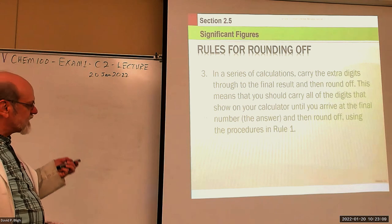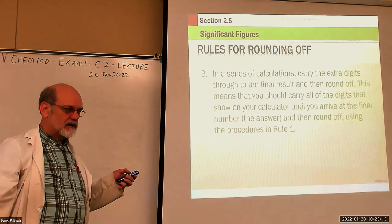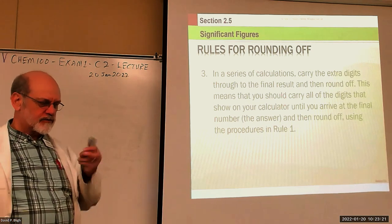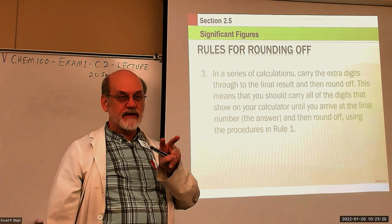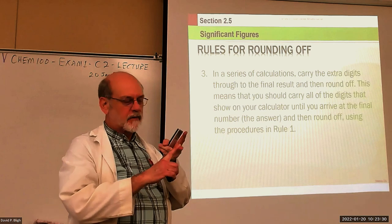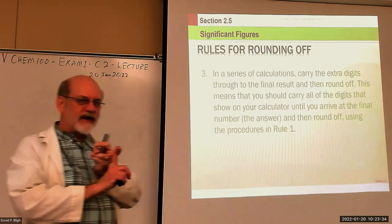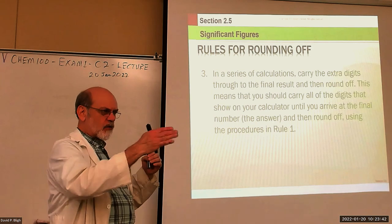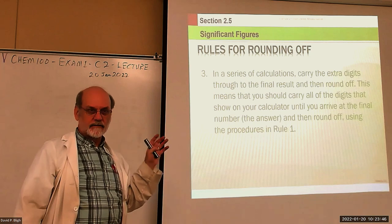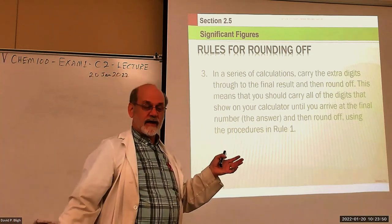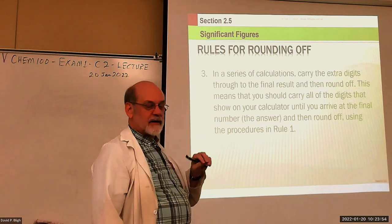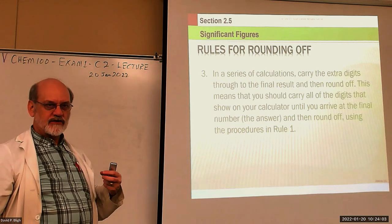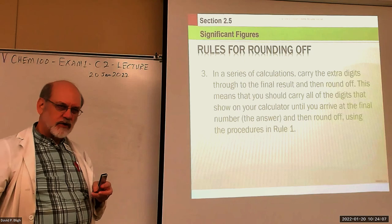There are basically two rules for significant figures in calculations. One is for multiply/divide and exponents; the other is for add/subtract. If you have multiply/divide only through all your calculations, you can work all the way to the end keeping all decimal places, and then round your final answer at the end — this avoids rounding error.